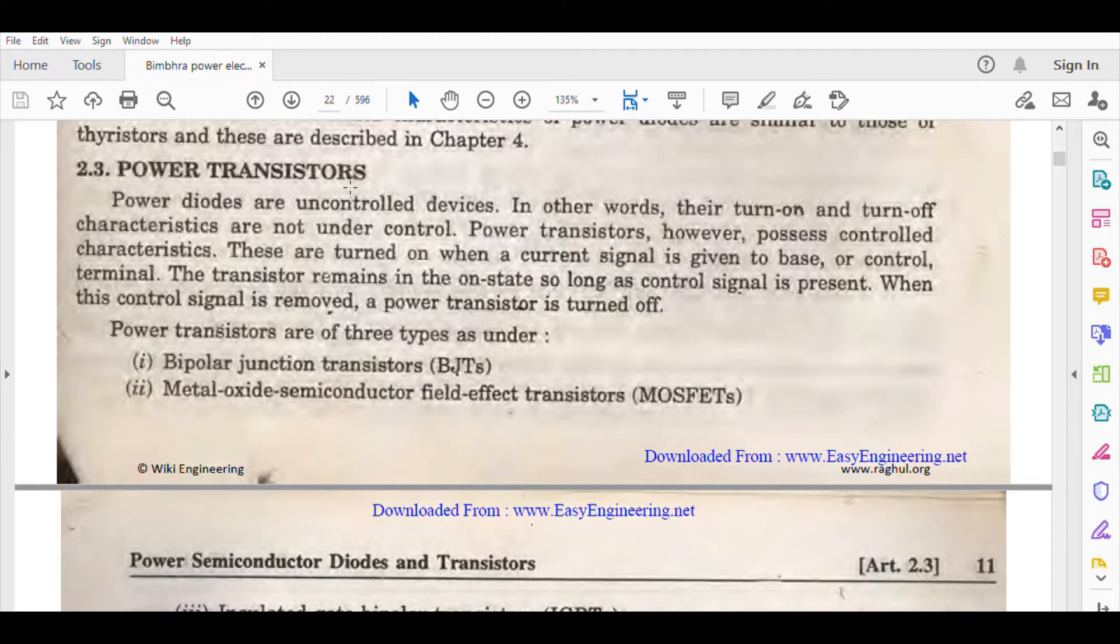Hello and welcome to this lecture. Today we are going to discuss power transistors. Power diodes are uncontrolled devices. This was the reason we went for the invention of bipolar junction transistors. A diode's characteristics cannot be controlled because it has only one junction, but when we talk about transistors with two junctions, we can control their characteristics.